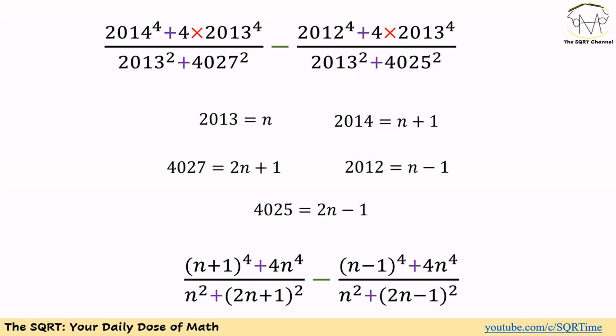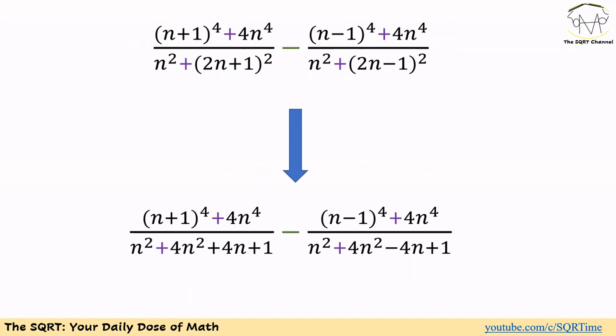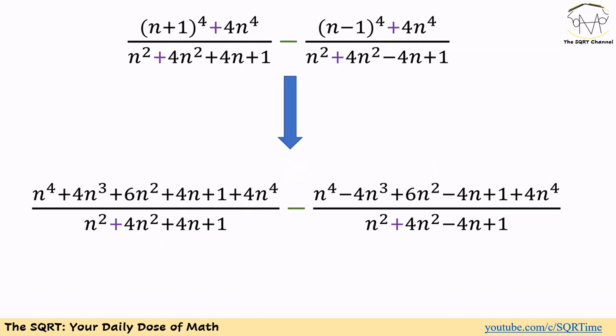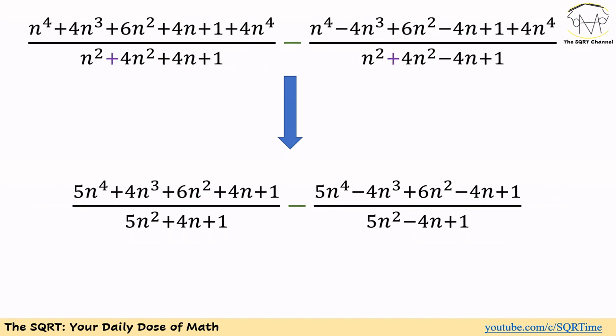Now let's simplify this expression further. We are going to start from the denominators and simplify (2N+1)² and (2N−1)². After expanding these, we move on to work with the numerators and simplify (N+1)⁴. At the end we have 5N⁴ plus 4N³ plus 6N² plus 4N plus 1 for the first numerator.